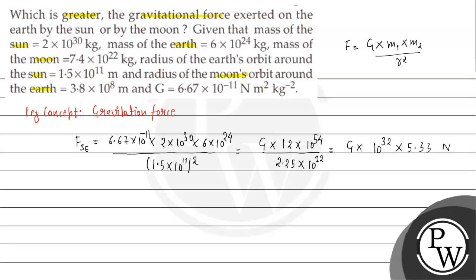Now for the gravitational force exerted on the earth by the moon. We use G into mass of earth (6 × 10^24 kg) into mass of moon (7.4 × 10^22 kg), divided by r squared, where r is the radius of the moon's orbit around the earth: 3.8 × 10^8 meters, squared. G is 6.67 × 10^-11.